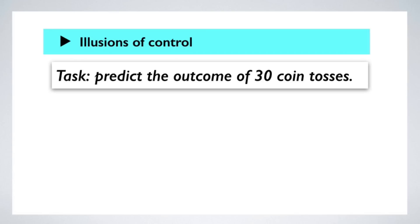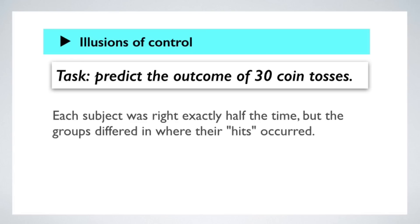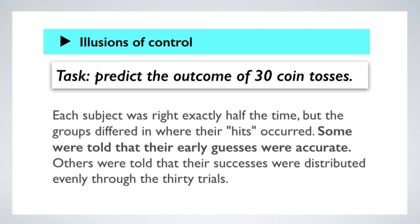Here's another famous experiment. Subjects are given the task of predicting the outcome of 30 coin tosses. They're not shown the toss — they're only given feedback on whether the toss landed heads or tails. The feedback was rigged so that each subject was told they got the right answer exactly half the time, so they had 15 successful guesses out of 30. They were told whether they predicted correctly immediately after each toss, but the subjects were told different things about where their hits occurred. One group was told their early guesses were accurate. Others were told their successes were distributed evenly across the 30 trials. Another group was told their successes occurred near the end.